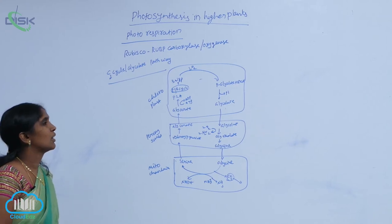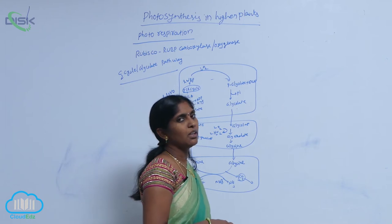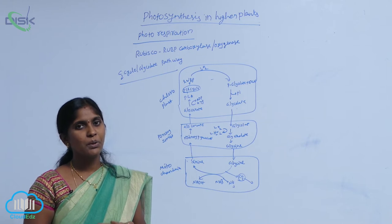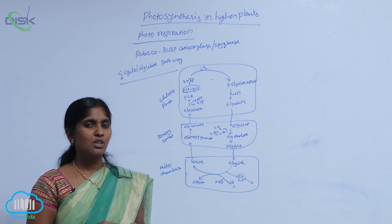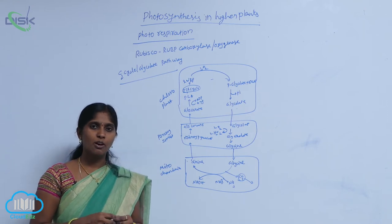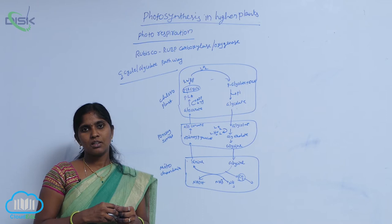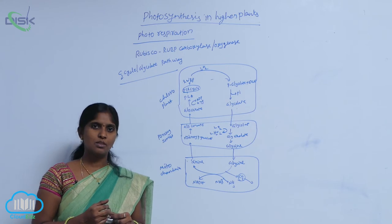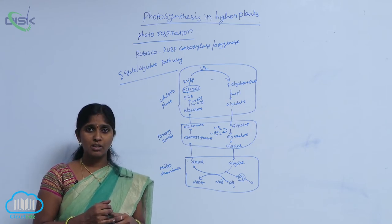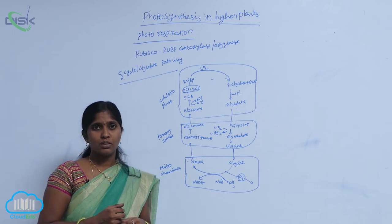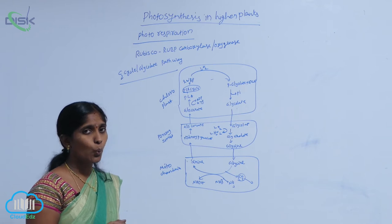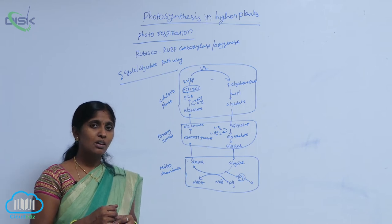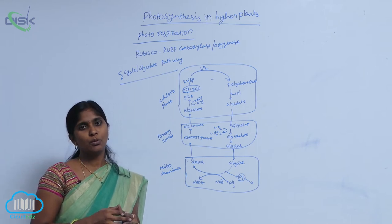Photorespiration. Plants normally go for photosynthesis, during which carbon dioxide is reduced into carbohydrates and oxygen is released. But plants also use O2 and release carbon dioxide. In what condition? When CO2 is less in the atmosphere, on that condition they go for photorespiration.